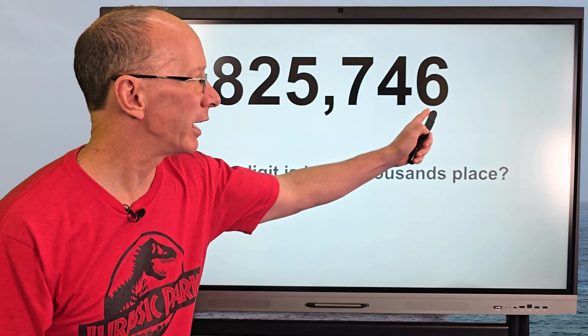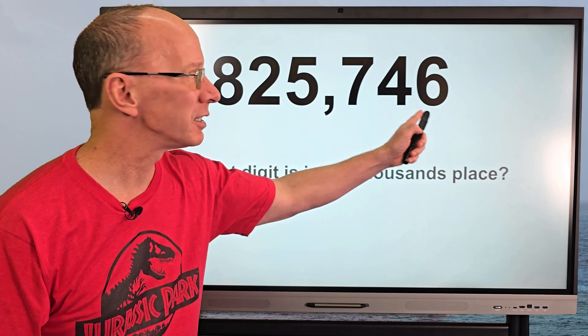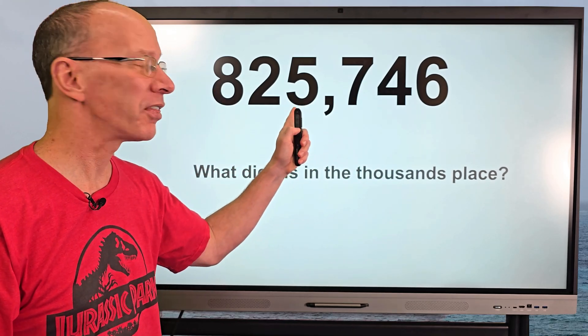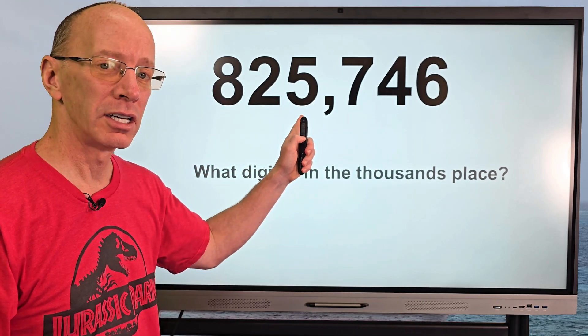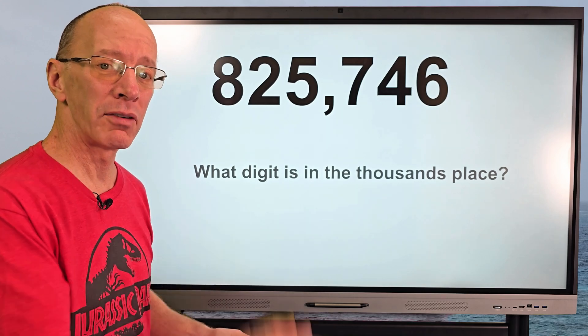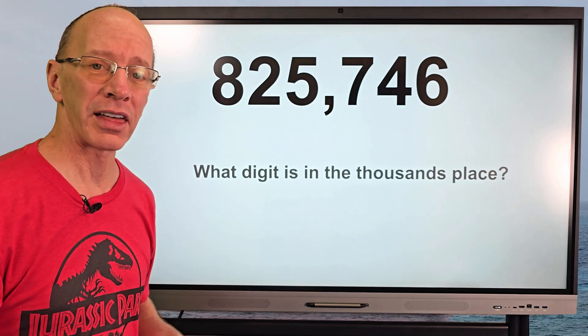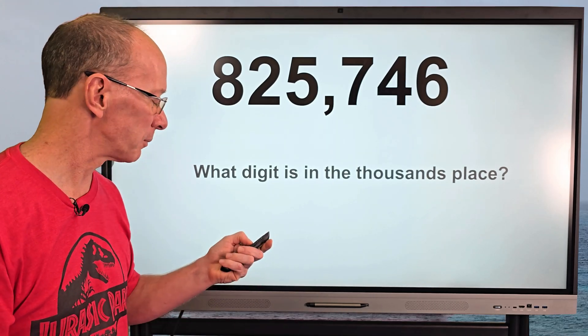So what digit or number is in the thousands place? Here we have the ones, the tens, the hundreds, and the thousands. So the number five would be in the thousands place.